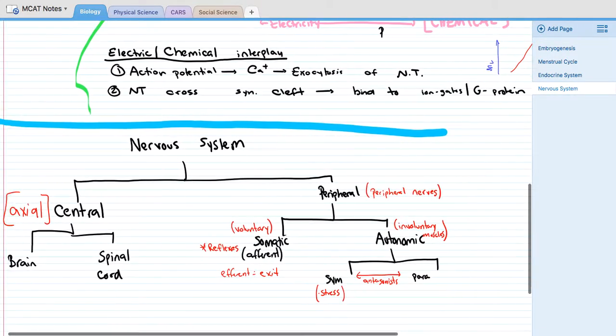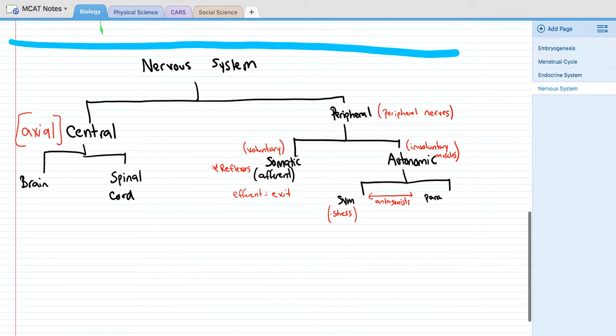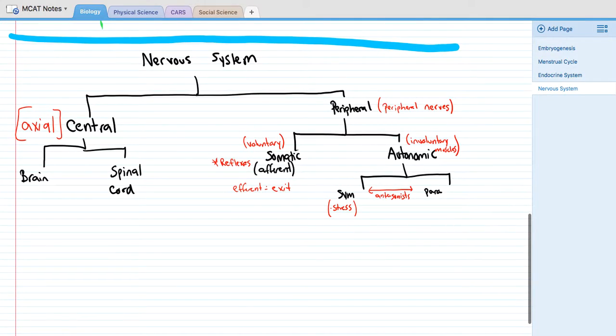This is a structure of the nervous system. The nervous system is divided into part one, which is central, and part two, which is peripheral. The central nervous system is made up of the brain and the spinal cord. If you know what axial skeleton is, this is going to be that spinal column, and then you'll have the head, which is the brain.